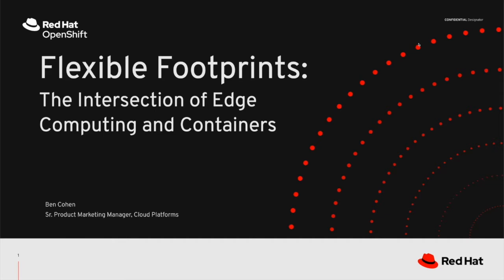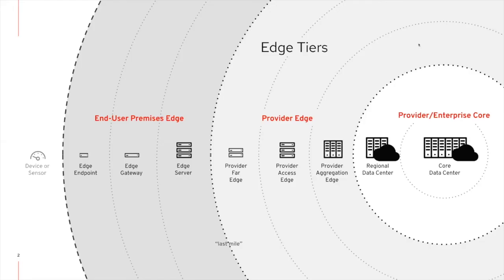Today I'm going to cover topics ranging from what and where edge is, how businesses are using it, and the architectural considerations to think about as your business moves new modern applications out to the edge. Edge is a distributed architecture where processing — the compute, storage, and network — are closer to users and data beyond just the core data centers and even larger regional data centers. Where the edge is can vary, and this diagram shows the varying edges that can exist.